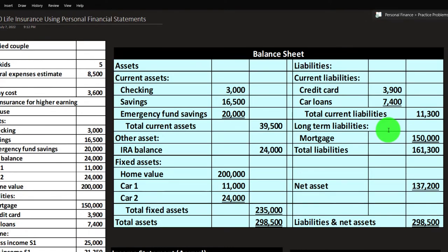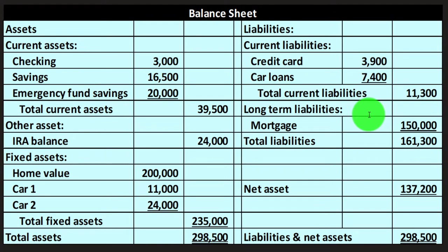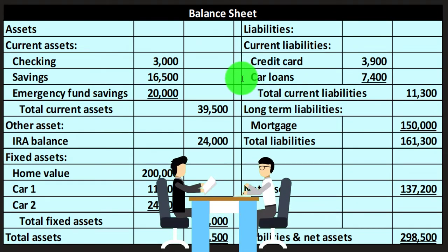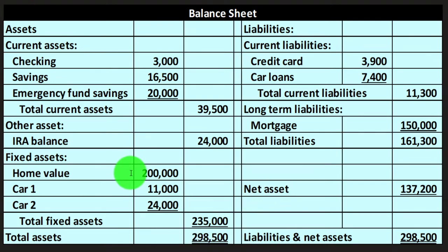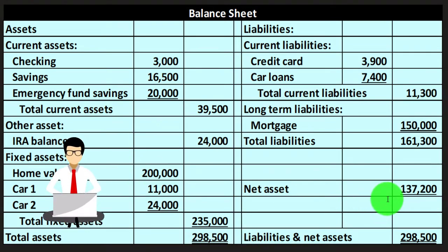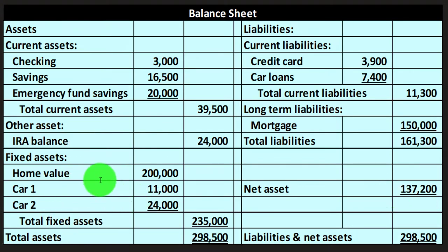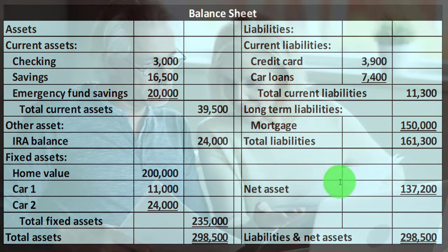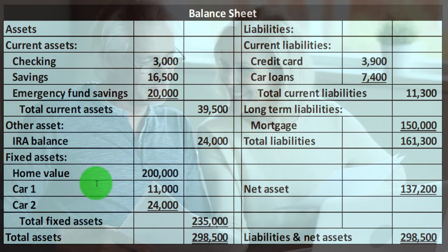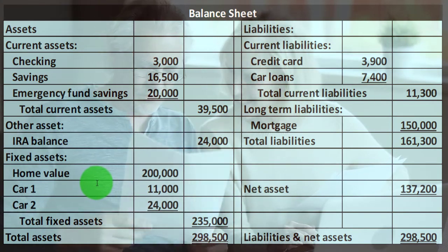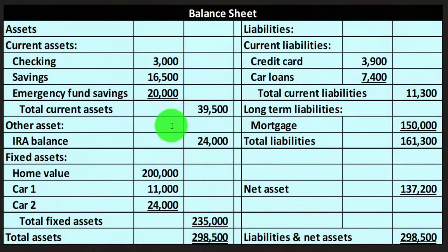A lot of this you can get from software like Personal Capital, which pulls ending balances from financial institutions — including credit card, car loan, and mortgage. What it will not pull in are fixed assets like the home value. When I look at the net assets, that's our net value, and although we're looking pretty good, notice a large part is being eaten up by the home, which is not liquid. So when we die, even though we have a positive net asset, we've got this big fixed asset we can't really use to pay off current liabilities.